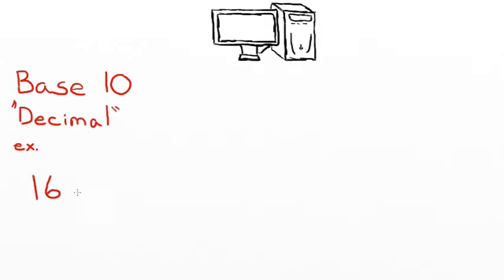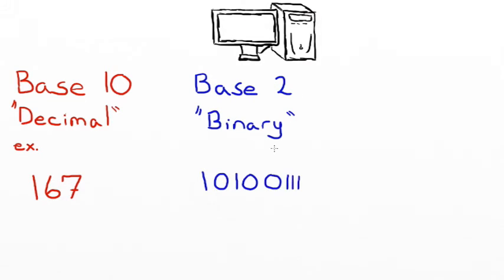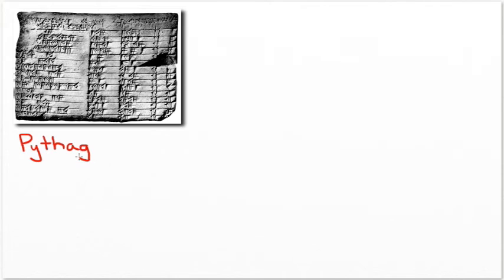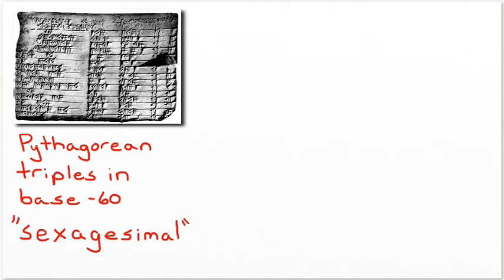Computers operate through the use of a base 2 number system, more commonly known as binary. And binary is interpreted more easily through the use of a base 16 number system, known as hexadecimal, or hex. In fact, the oldest positional number system that we have record of is a Babylonian system over 3,000 years old, and it's actually a base 60 number system.